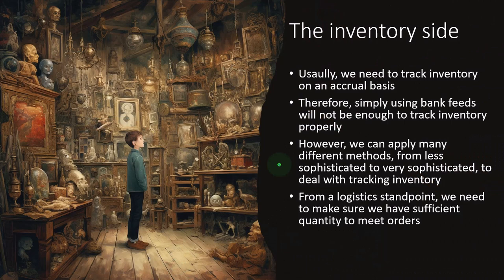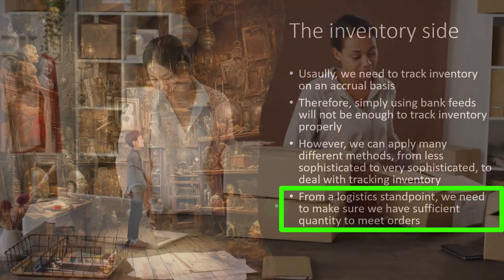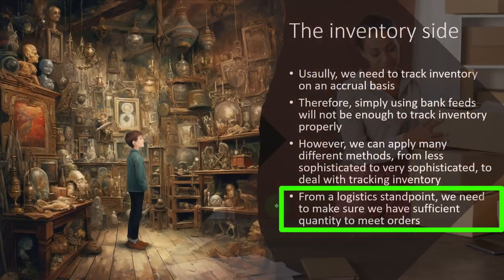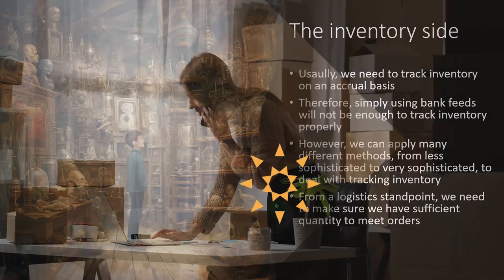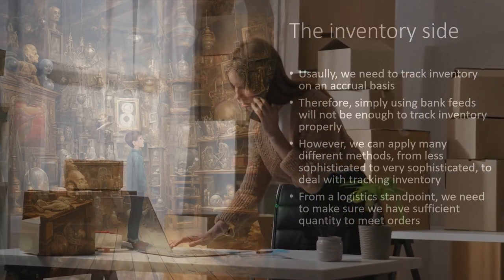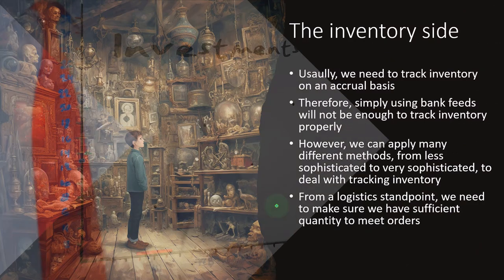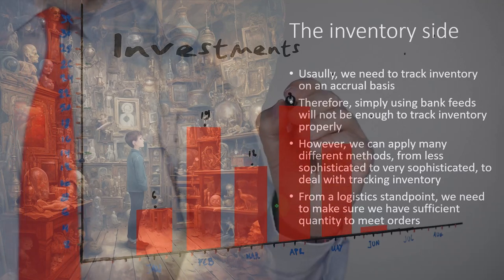From a logistics standpoint, we need sufficient quantity to meet orders. When thinking about inventory, most people building a Shopify store are focused on revenue generation — tracking inventory to make sure they can fulfill orders logistically. From the accounting side, we want to track inventory properly on the financial statements for tax preparation and also to make better decisions about what inventory to purchase, pricing, and how much to charge.